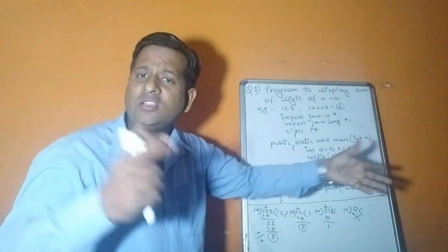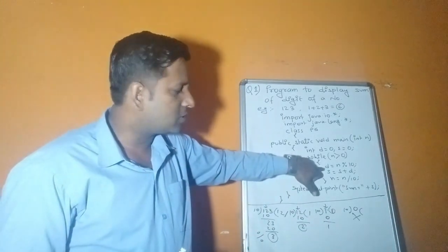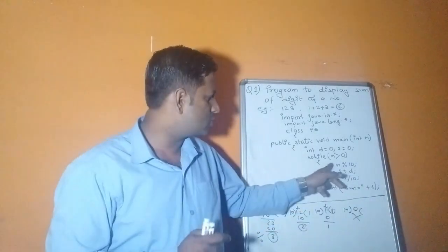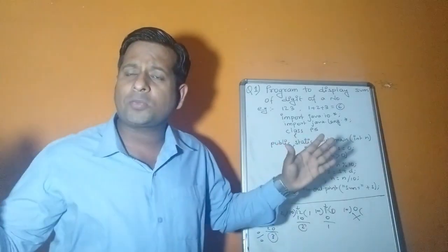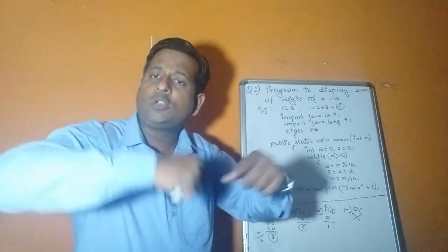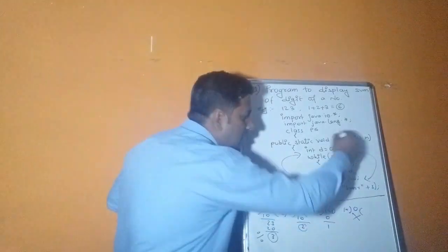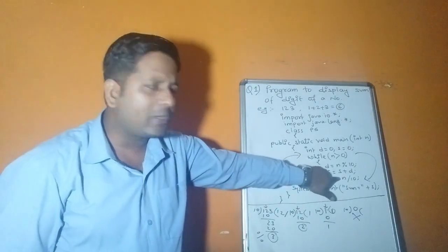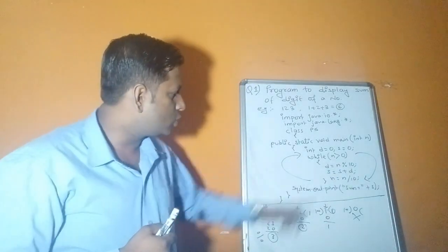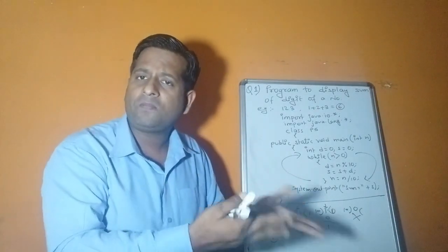The while loop condition is: number should be greater than 0. Inside the loop, first take out the digit: d = n % 10 (remainder gives the last digit). Then add the digit to the sum: s = s + d. Then reduce the number by taking the quotient: n = n / 10, so the next digit can be extracted. This keeps repeating, giving digits 3, 2, 1 which sum to 6.